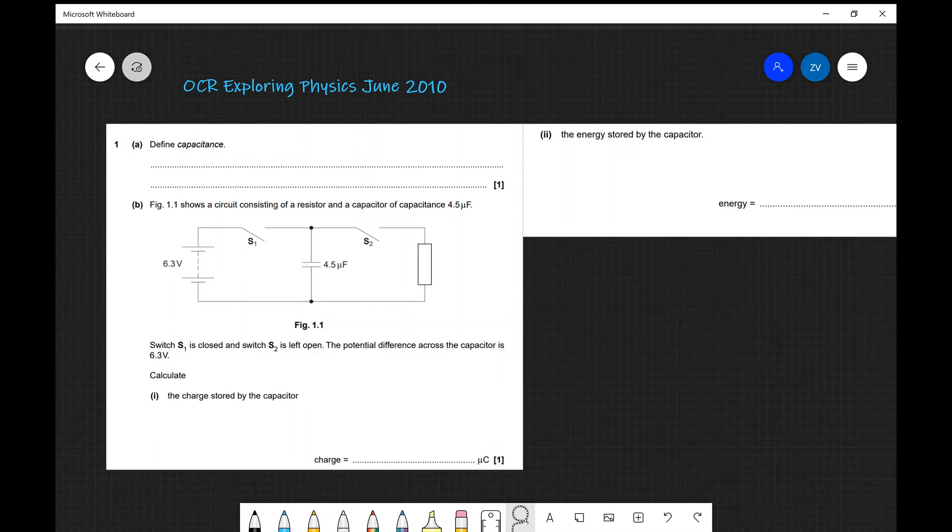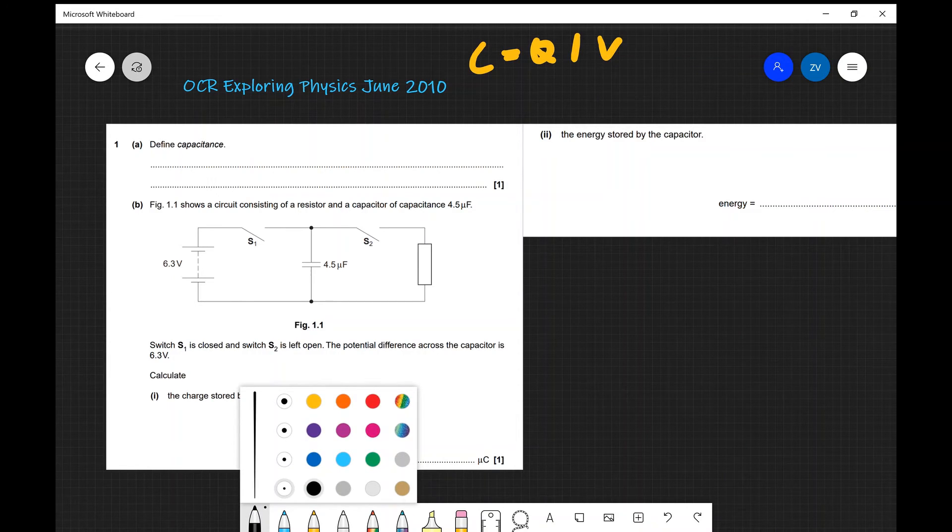Okay guys, now let's go through a written question as well. So this is question 1 from June 2010. Part A says to define capacitance. Now remember, Q is equal to CV, which means that the capacitance, C, is equal to Q over V. A formula is always a good way of just starting to think about those definitions. Because capacitance is Q over V. That means that it's the amount of charge stored per unit potential difference.